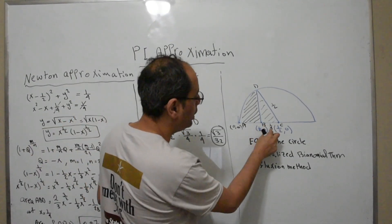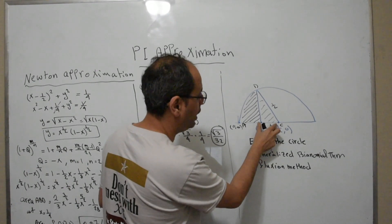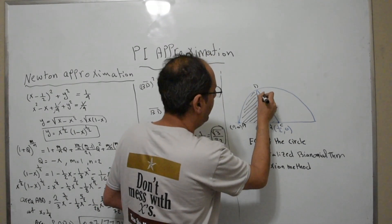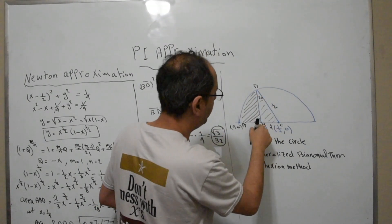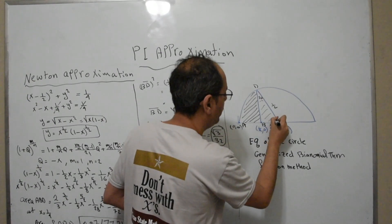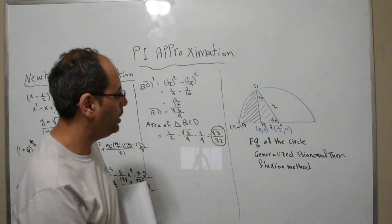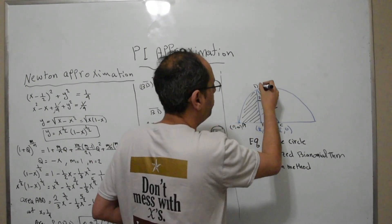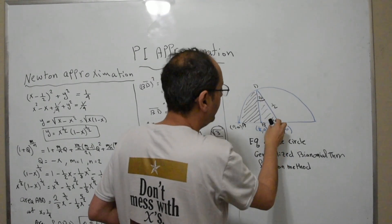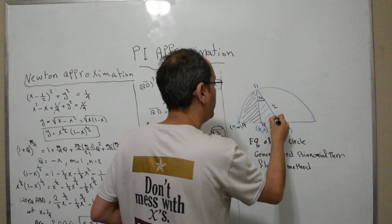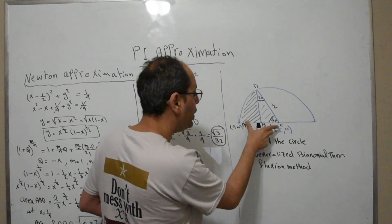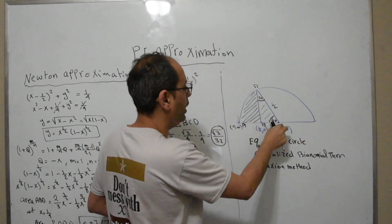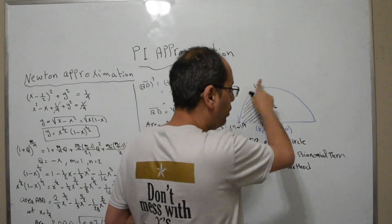Notice that this side is 1/4 and the hypotenuse is 1/2 — so 1/4 is half of the hypotenuse. By a geometric theorem, that means this angle must be 30°. And if this angle is 30° and the right angle is 90°, then the remaining angle must be 60°. If this angle is 60° and the whole semicircle spans 180°, then sector ACD is exactly 1/3 of the semicircle.